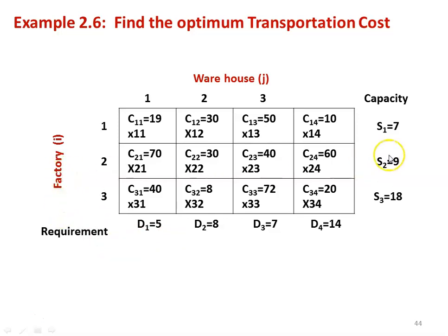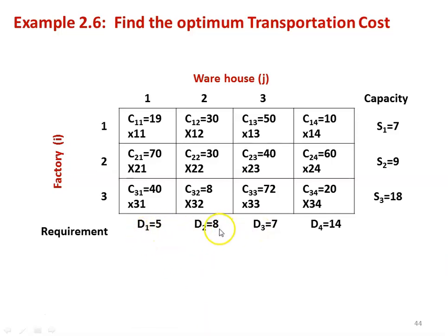The source points are factories with capacity S1 equal to 7, S2 equal to 9, and S3 equal to 18. The warehouse demands are D1 equal to 5, D2 equal to 8, D3 equal to 7, and D4 equal to 14. Before we begin the solution procedure, we check the balance of the problem: horizontally 5 plus 8 plus 7 plus 14 equals 34, and vertically 7 plus 9 plus 18 equals 34. The supply capacity is also 34, so it is a balanced type of problem.